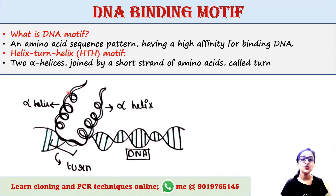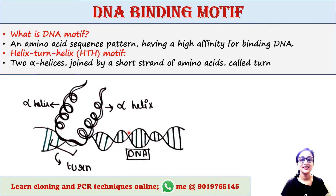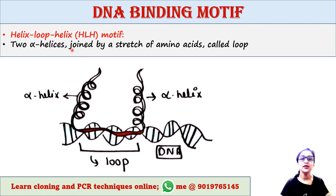The HTH motif has two alpha helixes, and these two alpha helixes are joined by a short strand of amino acid called a turn. HTH is found in different DNA binding proteins. This is the DNA, and the helix-turn-helix motif of the protein is binding to the DNA.